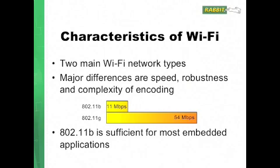What are some characteristics of Wi-Fi? I'm going to talk about two main Wi-Fi network types — there are more than these two, and I'll mention that in just a bit. These two types are 802.11b and 802.11g. The biggest difference is really the speed, the bandwidth available. 802.11b has a theoretical limit of 11 megabits per second, while 802.11g has a theoretical limit of 54 megabits per second.